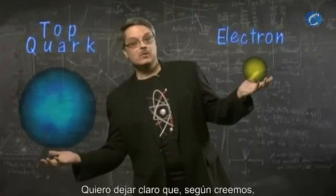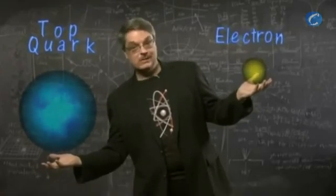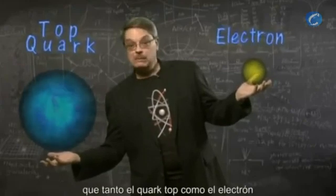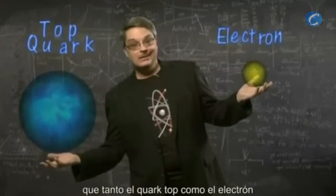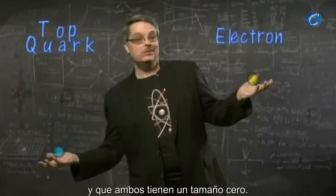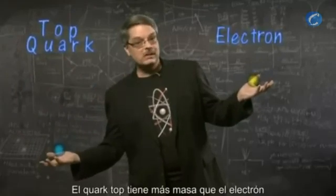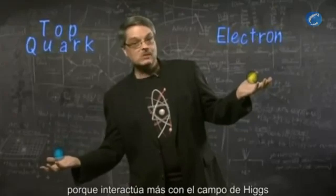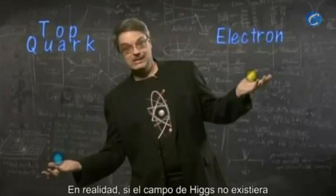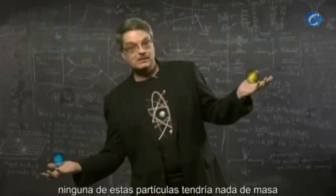I'd like to stress that we believe the top quark is not more massive because it's bigger — it's not. In fact, we believe that both the top quark and the electron are exactly the same size. Indeed, they both have zero size. The top quark is more massive than the electron simply because it interacts more with the Higgs field. Actually, if the Higgs field didn't exist, neither of these particles would have any mass at all.